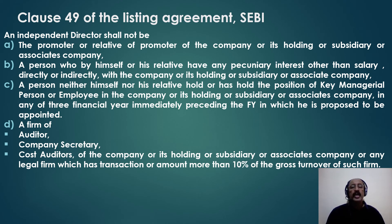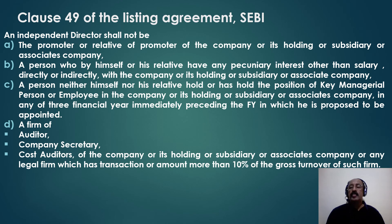An independent director should not hold any post of key managerial person or employee in the company even in the preceding financial year in which he is going to be appointed. Similarly, he should not have been a firm auditor, company secretary, or cost auditor — these positions should not have been held by the independent director for at least three financial years preceding the year in which he is to be appointed.